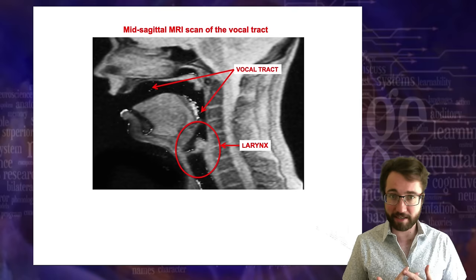Here are some nasal consonants. Bilabial nasals — this is 'm,' 'ma.' Labiodental nasals are produced by making the same articulatory gesture as 'fa' or 'va' but making a nasal instead — you get a sound like 'ɱa.' This might sound like an exotic sound, but we actually have it in English. Think about how you pronounce the word 'emphasis' very slowly — the 'm' there is actually a labiodental nasal: 'emphasis.'